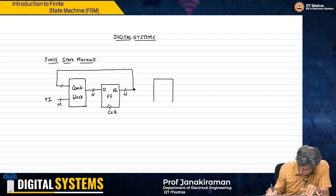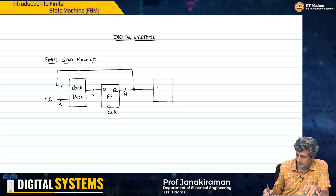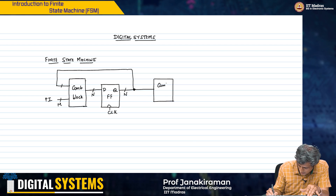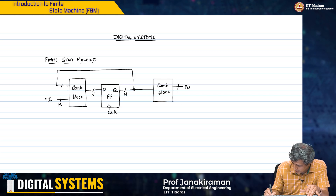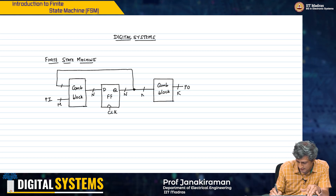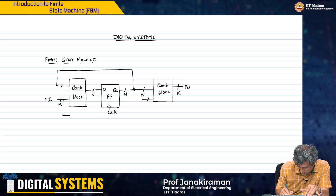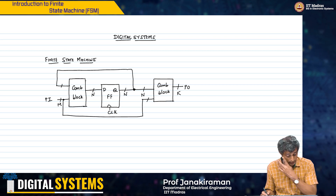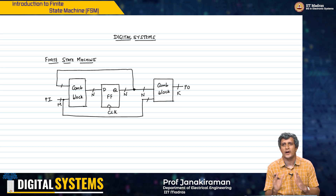I could have some m bits of primary inputs and something coming out of this combinational block. I have another combinational block here which produces primary outputs. So this is a very generalized block diagram of a finite state machine.